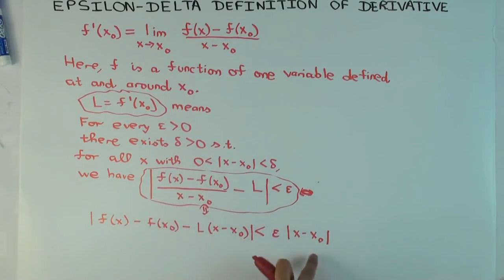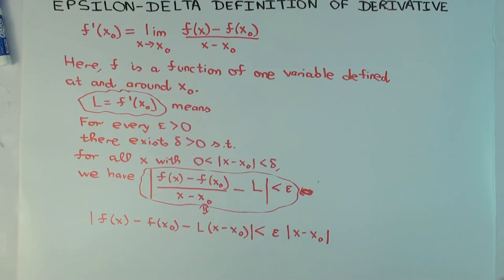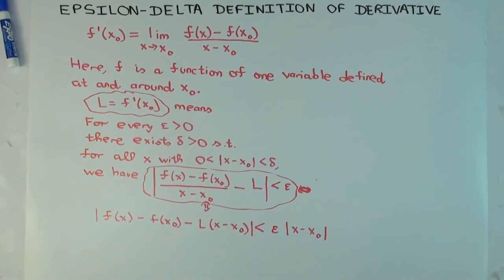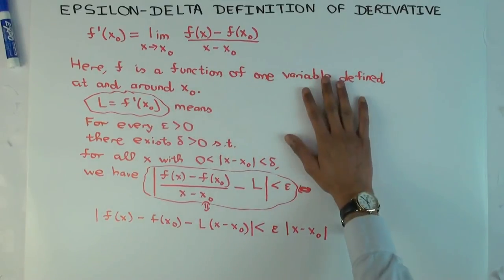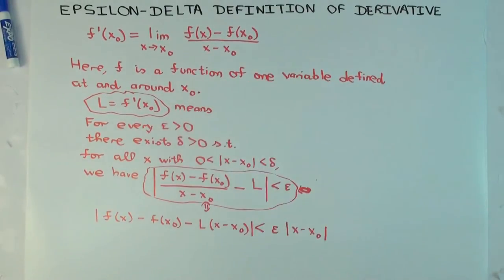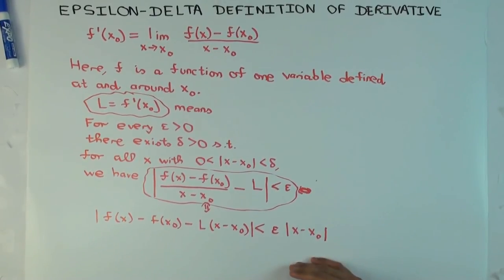So you, instead of writing this, you could write the lower thing. So this is the epsilon-delta definition of derivative. Now, why did I give you an epsilon-delta definition of derivative? What do you think is the purpose? Well, it's actually hard to see right now, but in case you're interested, this is actually a nicer definition of derivative if you use this version, because it doesn't involve any division. Okay. There's no division.